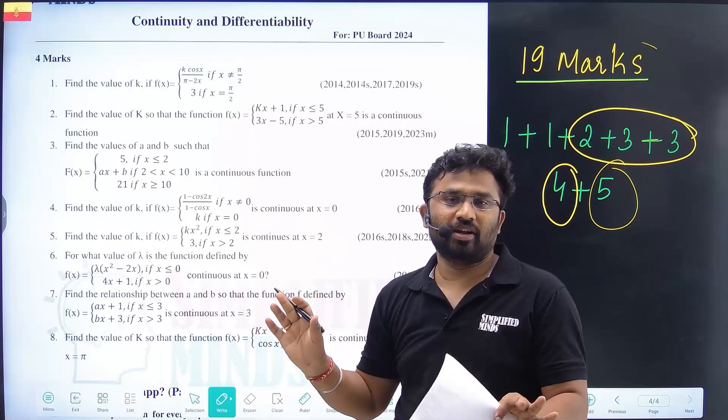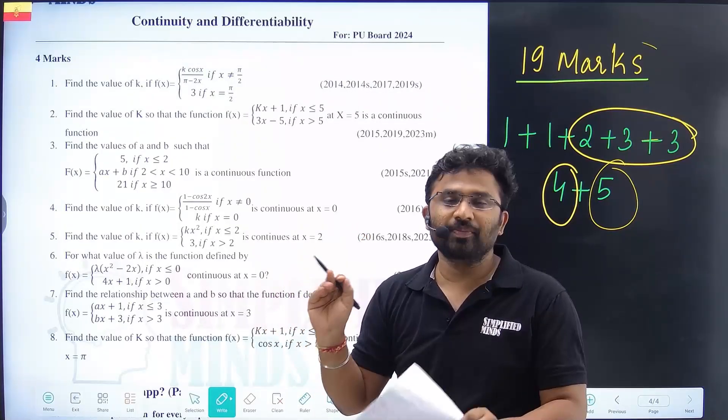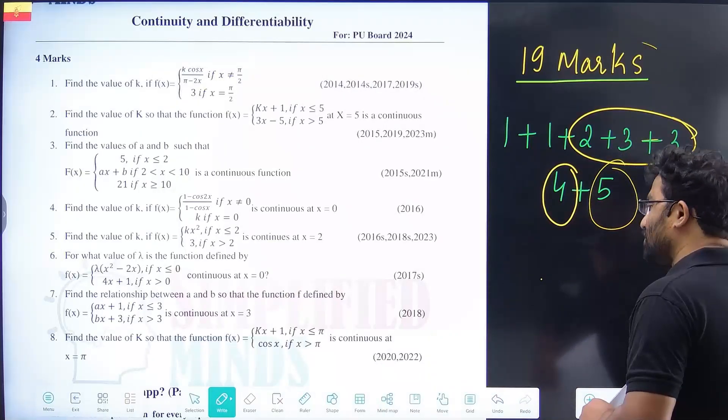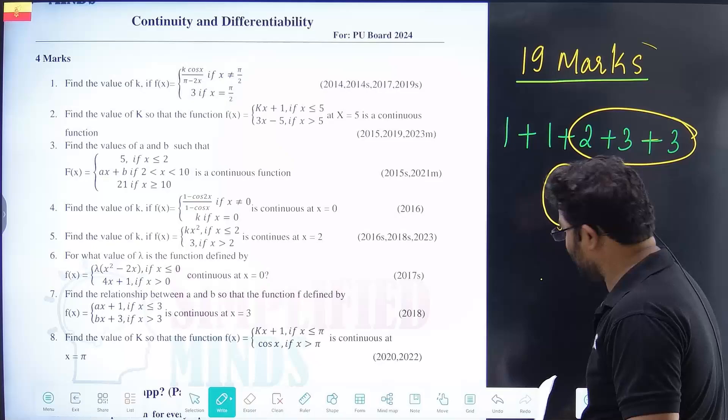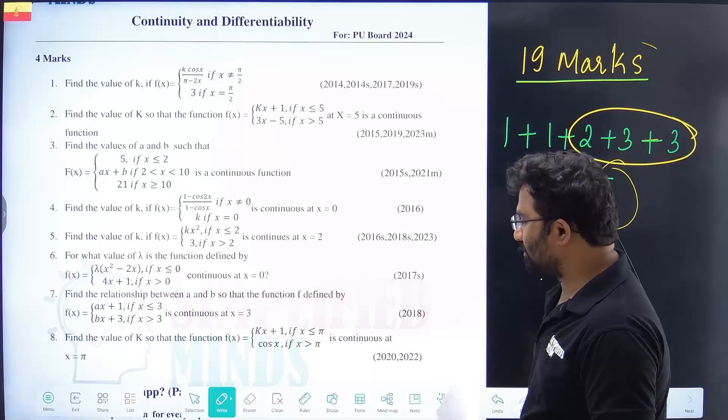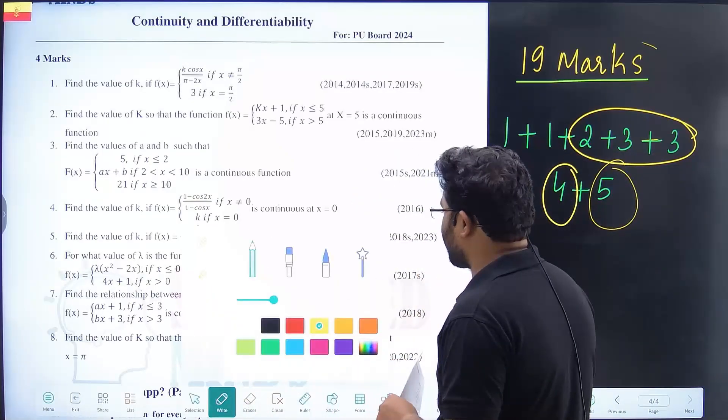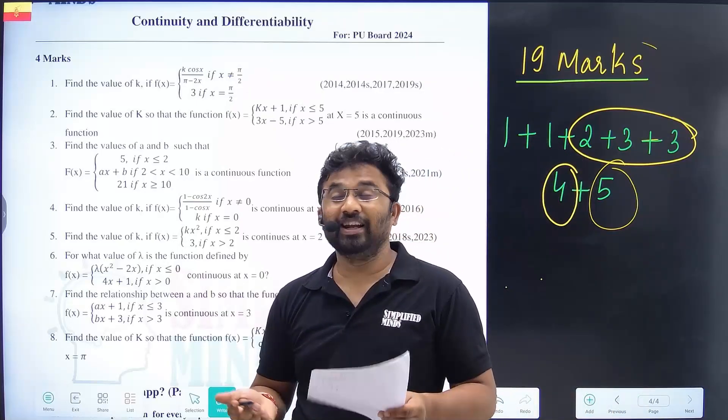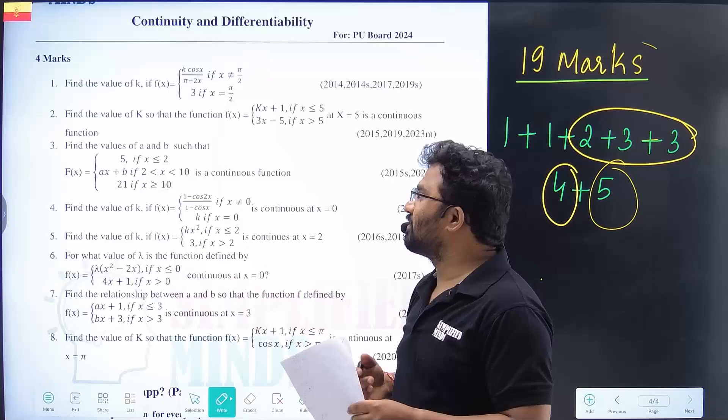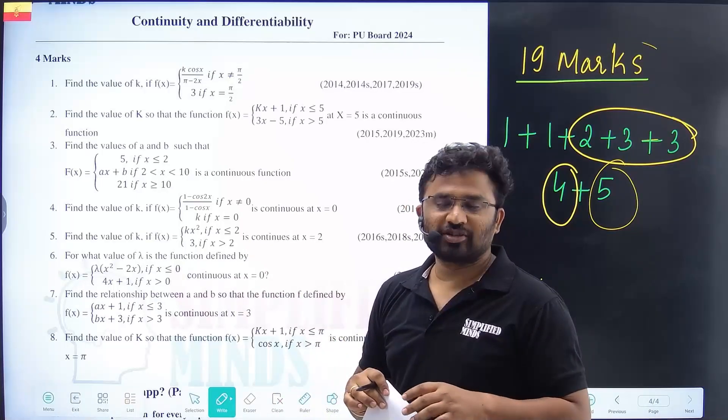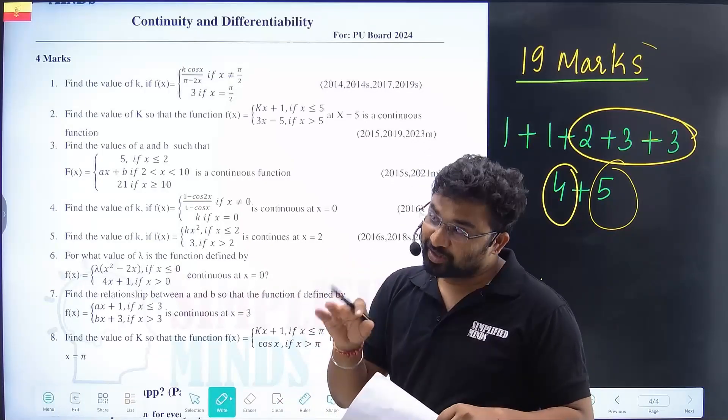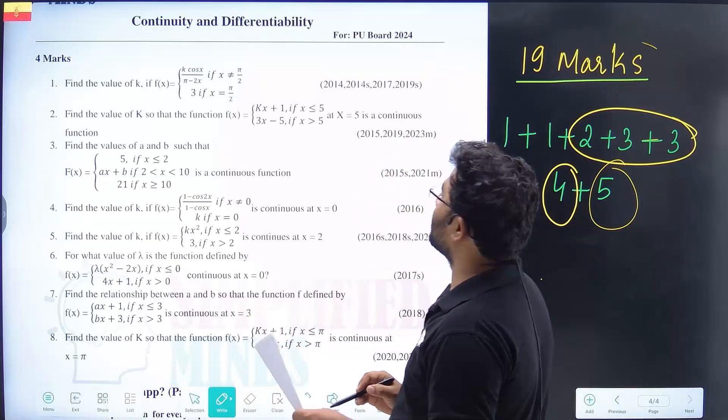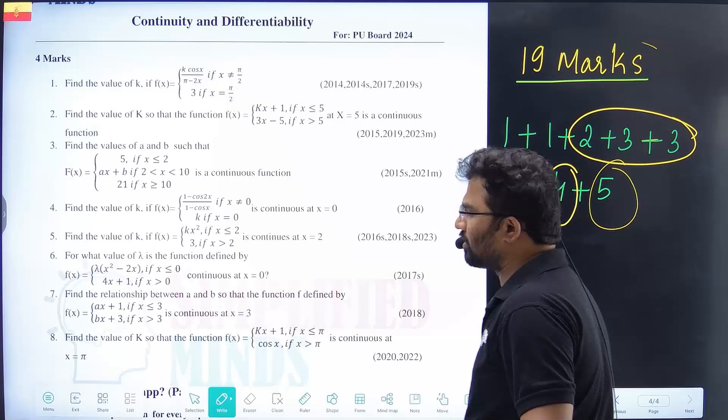It's not good Makhla. You have to target 9 out of 19 marks. In board exams, continuity and differentiability questions appear regularly. Don't worry about the difficulty - if you prepare well, you'll succeed. Coming to continuity and differentiability now - these are four mark questions.